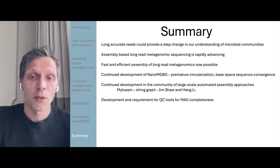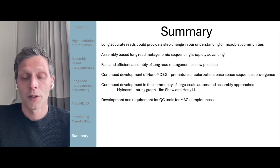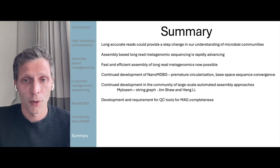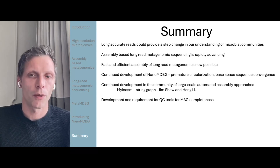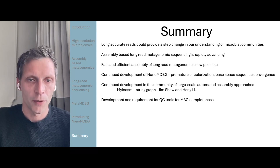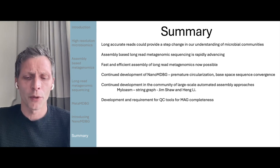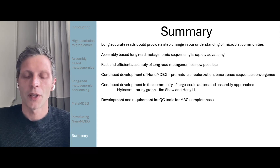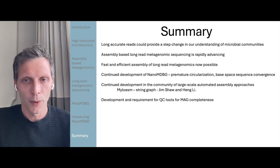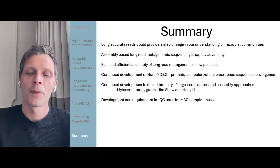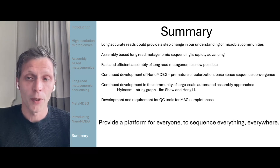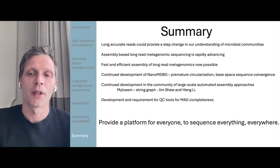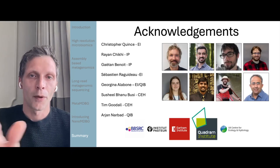What people are suggesting we go to next is development of QC tools and curation tools for MAGs which have been created through large automated assembly processes. I'd like to leave you with this final thought: whilst Nanopore has always said they like to provide a platform where anyone can sequence anything anywhere, what we're trying to achieve is to provide a stable platform where everyone can sequence everything everywhere. Thank you very much.